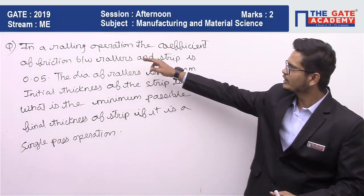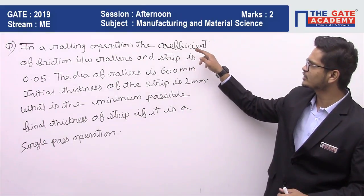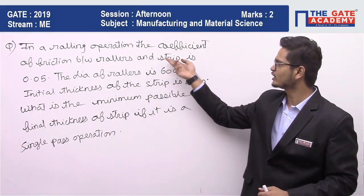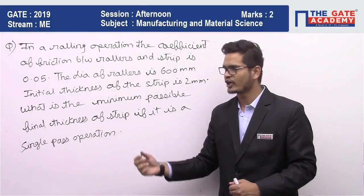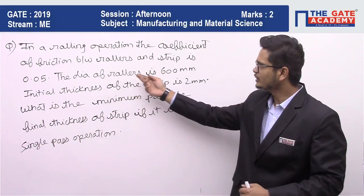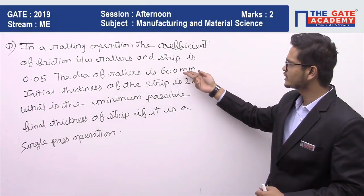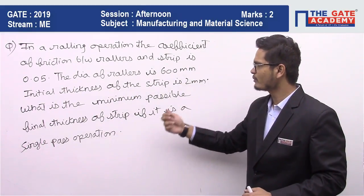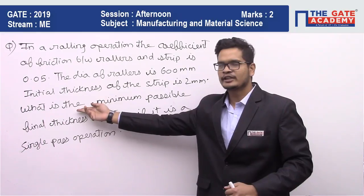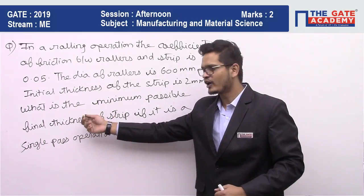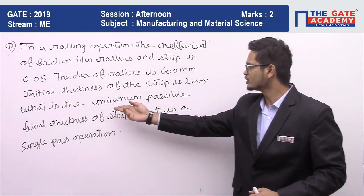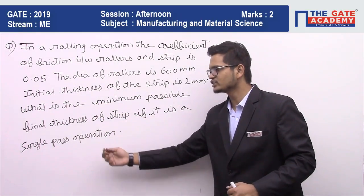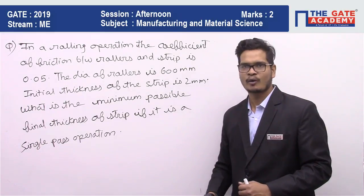So the question is: in a rolling operation, the coefficient of friction between rollers and the strip is 0.05. The diameter of the roller is 600 mm. The initial thickness of the strip is 2 mm, and they are asking us to find what is the minimum possible final thickness of the strip if it is a single pass operation.